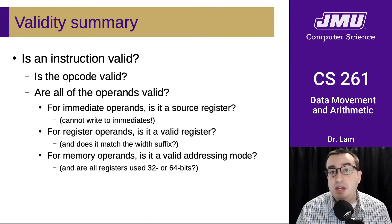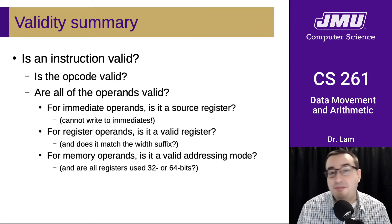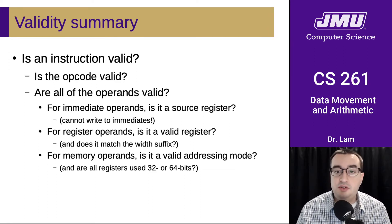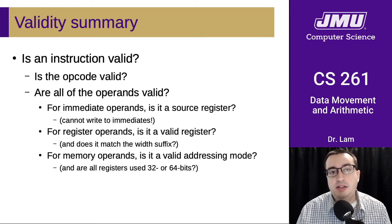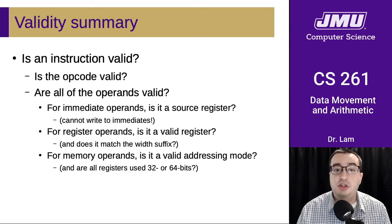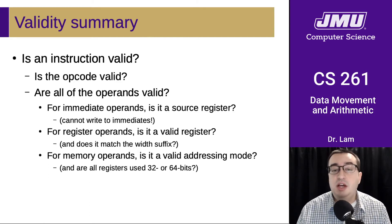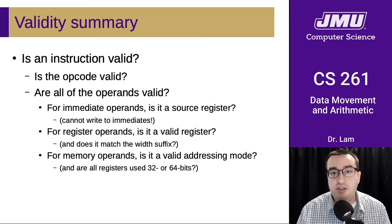This involves checking immediate operands — making sure that you're not writing to any immediate operands, because an immediate is just something encoded in the instruction and it doesn't make sense to write to that kind of operand. For register operands, we need to check that it's a valid register, and if there is a width suffix specified, we need to make sure they match. For memory operands, we need to make sure it's a valid addressing mode and that all of the registers used during the calculation of the effective address are all 32 or 64 bits.